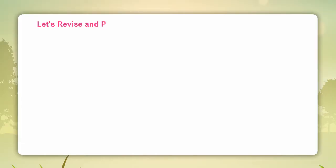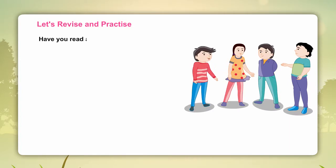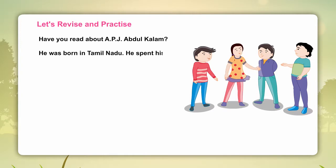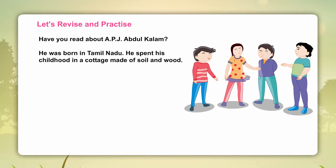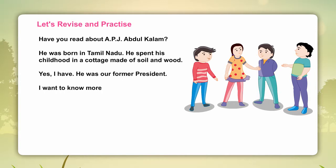Nouns — Let's reverse and practice. Have you read about APJ Abdul Kalam? He was born in Tamil Nadu. He spent his childhood in a cottage made of soil and wood. Yes, I have. He was a former president. I want to know more about him.